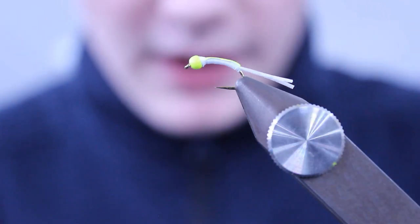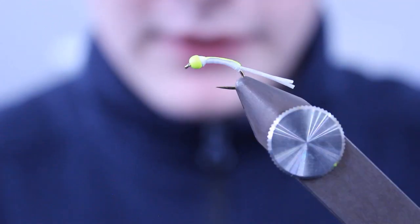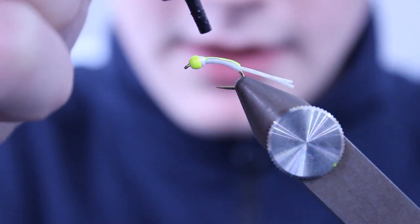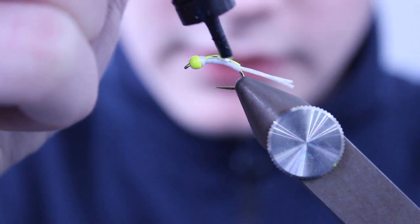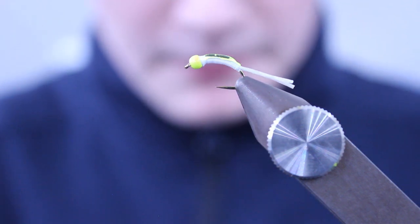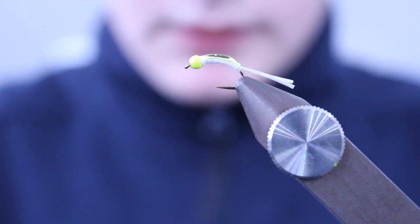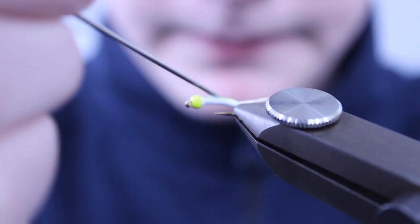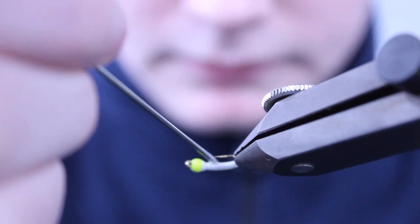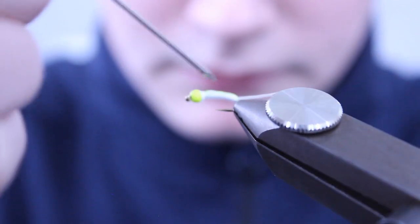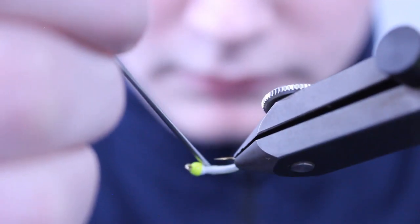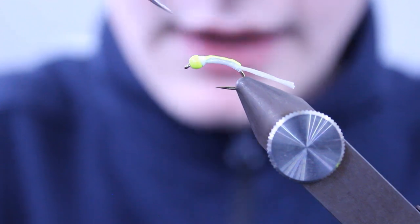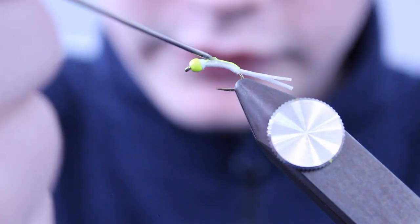Now to finish the fly off, I'm going to give it a coat of Gulff Classic Clear UV Resin. Apply a small amount onto the top of the hook. Use a dubbing needle to spread evenly around the fly. At this point, you're not worried about time as it's not like varnish. It only cures when you put the torch on it.